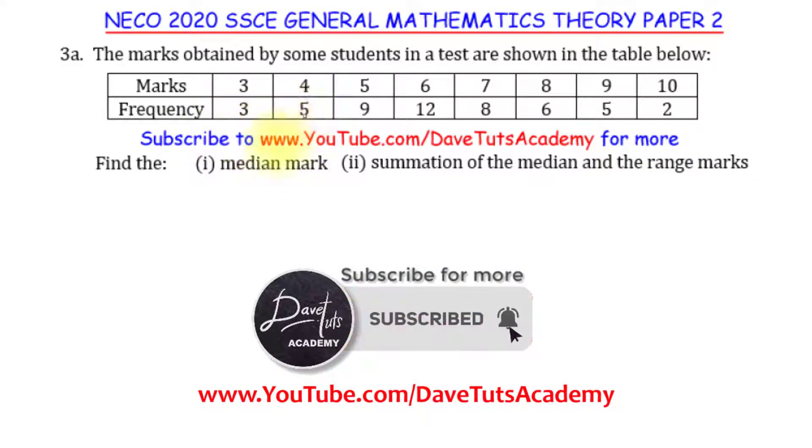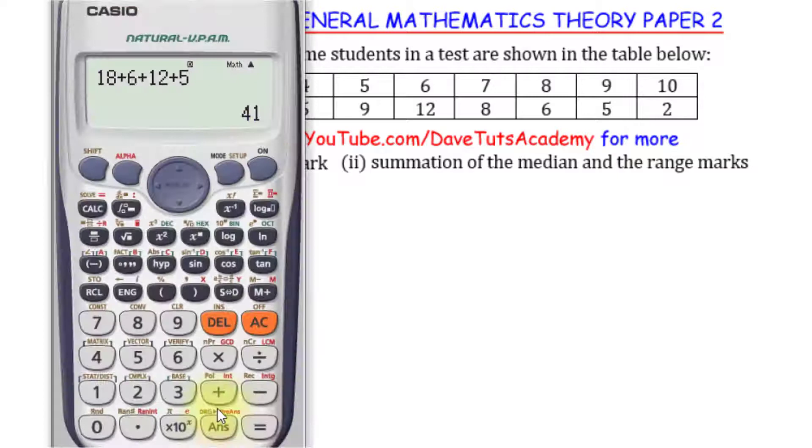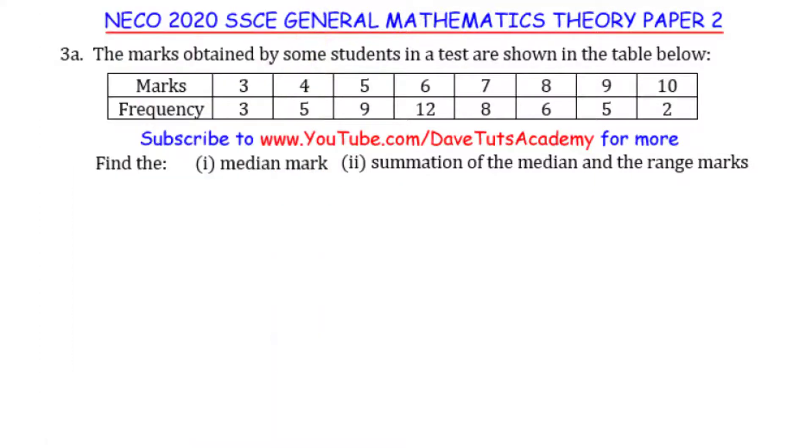In this question where we have frequency, to find the median mark we need to know the total number of students by adding all the frequencies together: 3 + 5 + 9 + 12 + 8 + 6 + 5 + 2. That equals 50, so the total number of students is 50.